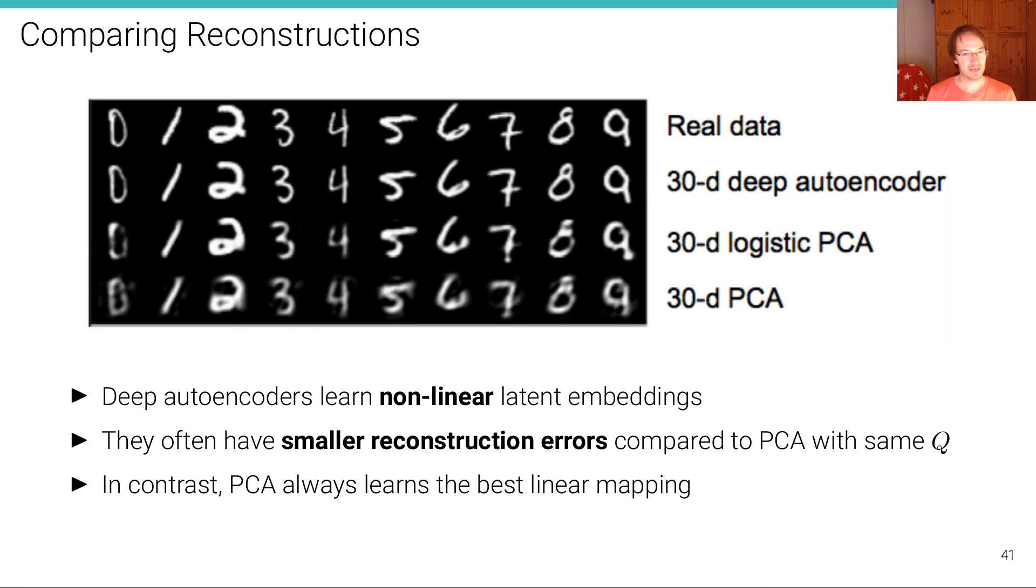We can do the same thing for MNIST. Here are some results of reconstructions on MNIST. In the first row is the real data. The second row is the data from a deep autoencoder. The third is a logistic PCA model and the fourth is PCA. And you can see that this nonlinear autoencoder leads to more sharp, more crisp reconstructions compared to PCA using the same latent dimensionality. In contrast, PCA always learns the best linear embedding, but the linear embedding is not enough to capture that data set well.